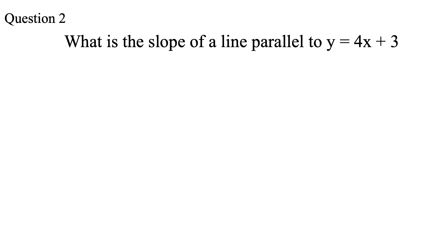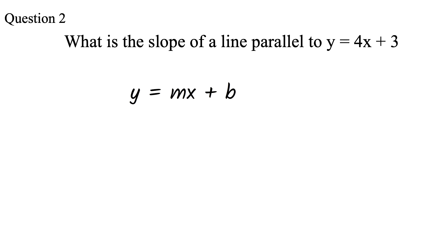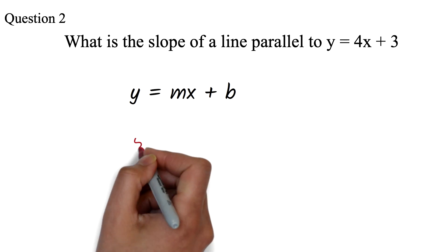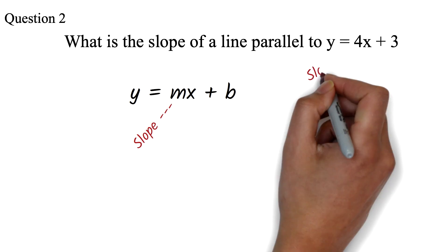Question 2: What is the slope of a line parallel to y equals 4x plus 3? If you see a question like this on the GED, consider it an easy bonus point. There are two things you have to know. The first is that the equation is in the slope-intercept form y equals mx plus b. In this form, the coefficient of x, or the number with the x, is your slope.